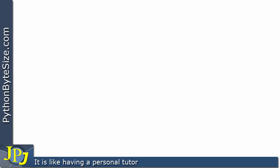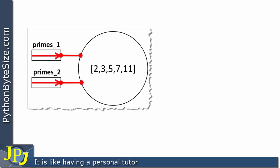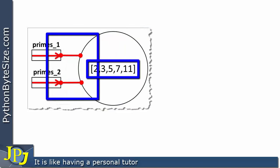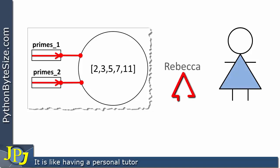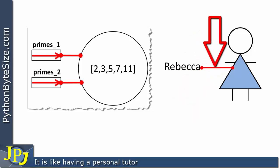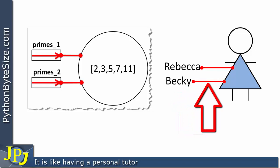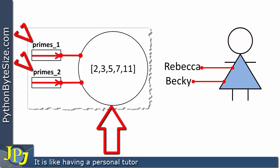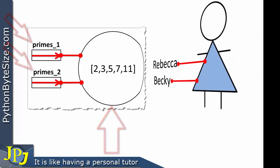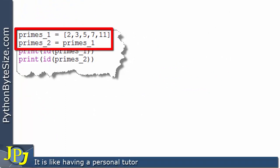It might be useful to draw an analogy. We have one object with two names bound to it — this is rather like an individual named Rebecca. The name Rebecca is bound to that person, but Rebecca could also have a nickname, Becky. Becky is bound to the same person. So this individual object has two names: Rebecca and Becky — just as this object has two names: `prime_one` and `prime_two`.